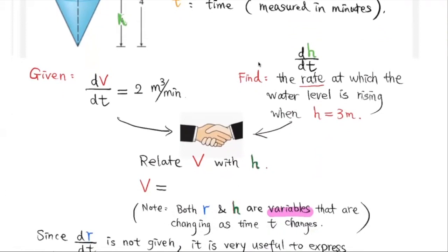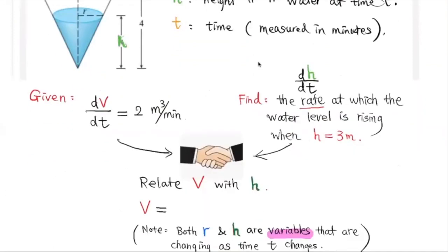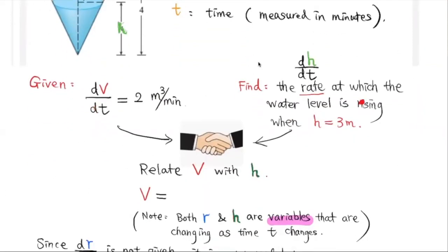We are given dV/dt equals 2 cubic meters per minute, which is how fast the water volume is increasing. We are trying to find dH/dt when H equals 3 meters. So we are trying to relate these two rates of change, and to do that we will first relate the volume V with H.